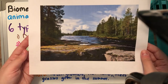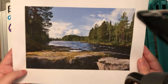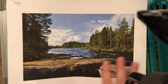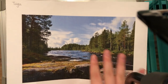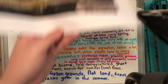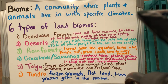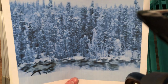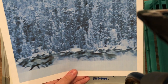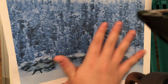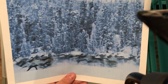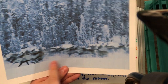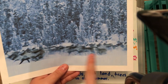Here is a taiga during its summer months — it's really pretty with green trees and no snow on the ground. And here is a taiga during the winter months — it's similar to the deciduous forest except with a lot more snow. The conifer trees look fuller and are not dead-looking like the deciduous forest. You can also see a photo of what I think are wolves running by.